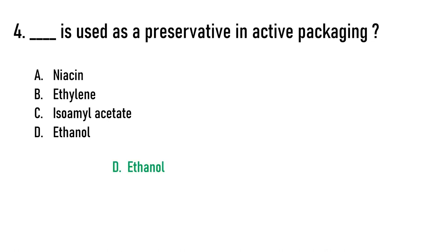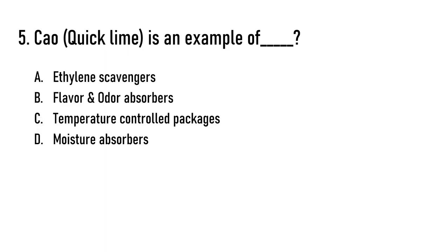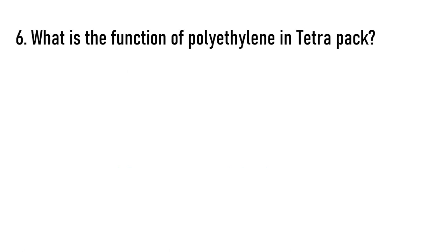Next question: CaO quicklime is an example of dash. Options are ethylene scavengers, flavor and odor absorbers, temperature controlled packages, or moisture absorbers. The correct answer is option C — temperature controlled packages.